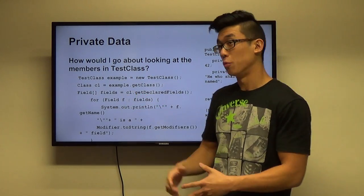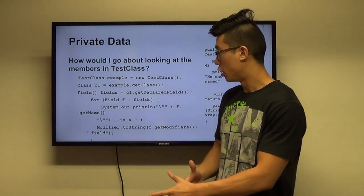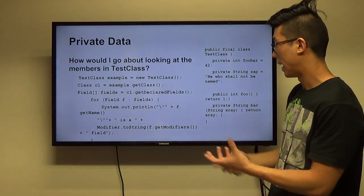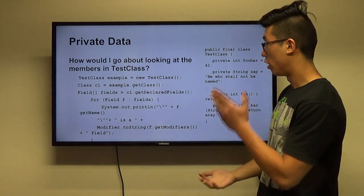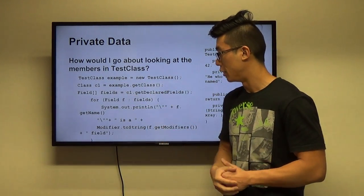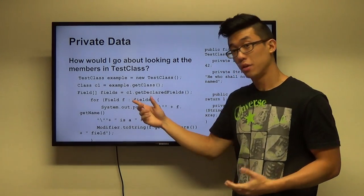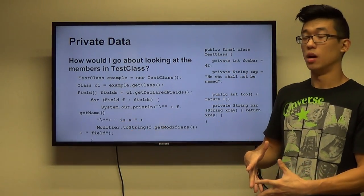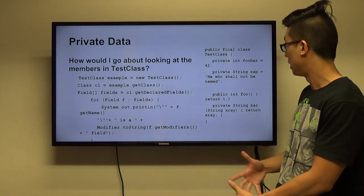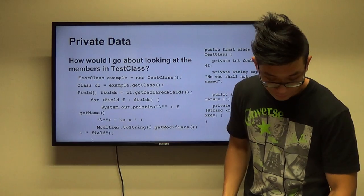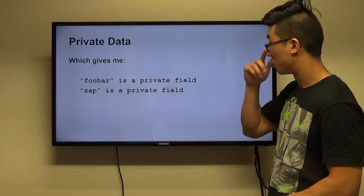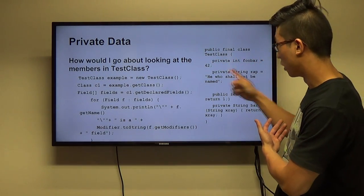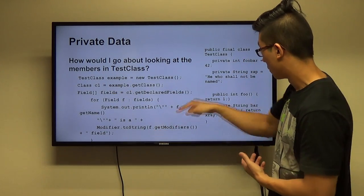I'm doing pretty much the same thing with fields as I did with methods in String, except this time instead of an array of methods I'm making an array of fields: `Field[] fields = c.getDeclaredFields()`. The 'declared' means I want all fields — public and private. For every field in that array, I print it out and get the modifier type to see if it's private, public, static, or final. Output shows `fooBar` is a private field and `zap` is a private field.